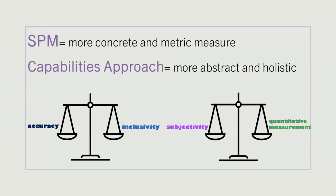We think adding the capabilities approach into the SPM will account for factors that income and other statistics cannot necessarily show, and better represent each individual's circumstances and abilities. Our method balances accuracy with inclusivity and adds subjectivity to clear quantitative measurement.